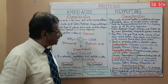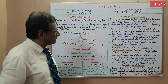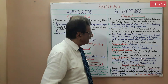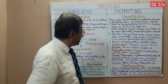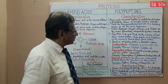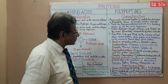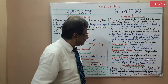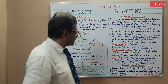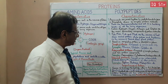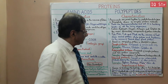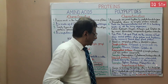The third type is derived protein, which forms as an intermediate product during the breakdown of other proteins. Examples are peptone, protease and metaprotein, etc.